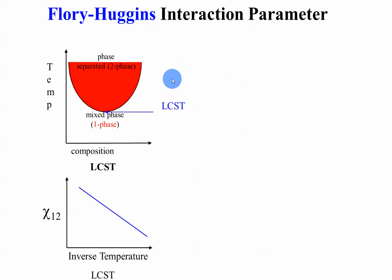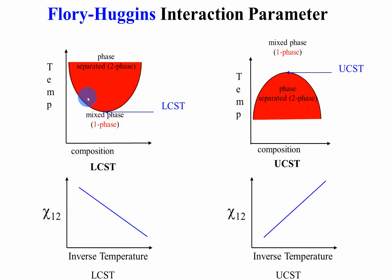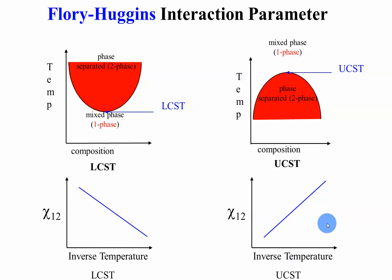Let's look at the Flory-Huggins interaction parameter. In the case where phase separation occurs upon heating, it's called lower critical solution temperature, or spinodal temperature. When you heat up, chi gets stronger, getting you into the two-phase region — a build-up of composition fluctuations. In the case where phase separation occurs upon cooling, when you heat up chi gets weaker, taking you into the single-phase mixed region. This is LCST — lower critical solution temperature — and this is UCST — upper critical solution temperature. It's a variation of chi versus inverse temperature, in the mean field framework.